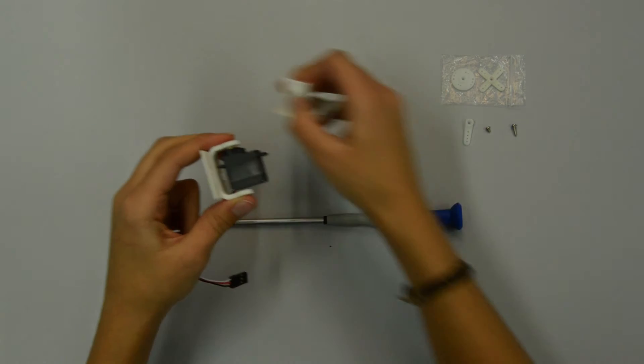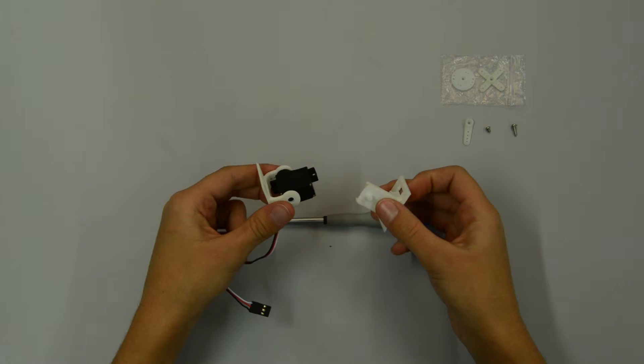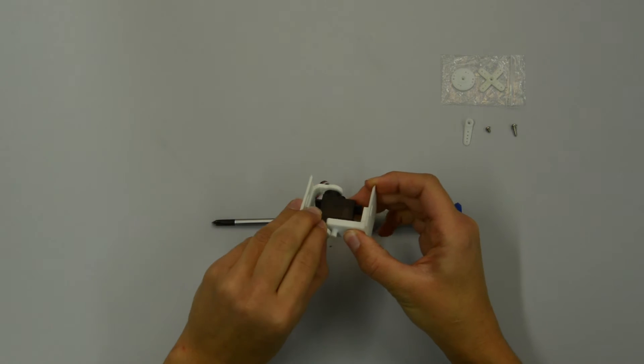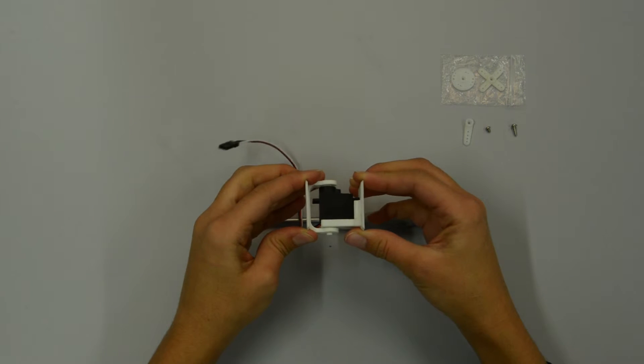Then, slide the servo holder part along the back of the servo until you reach the frame. Flex it open gently and keep sliding the part until the shaft clicks into place.